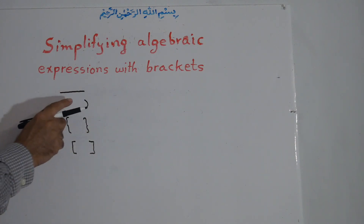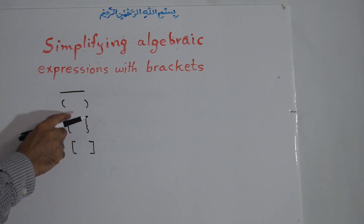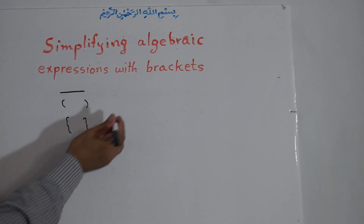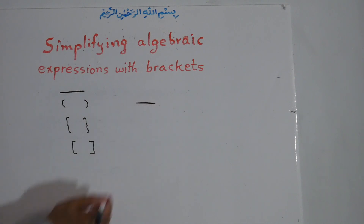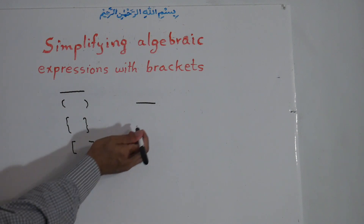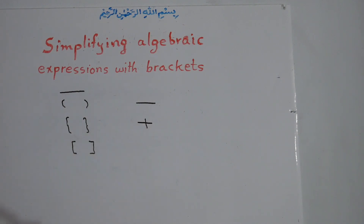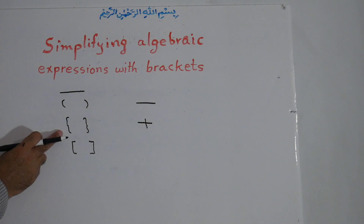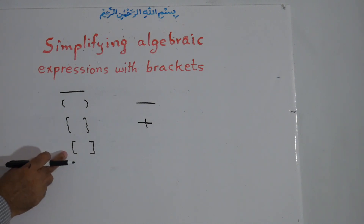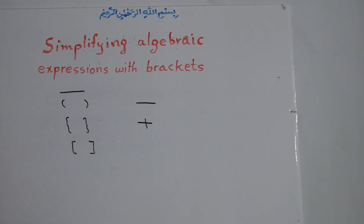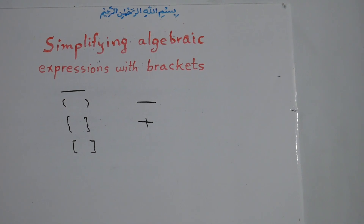First we simplify inside the bracket, then we perform the operation with what is outside the bracket. If there is a negative sign in front of the bracket, all the signs inside will change — positive to negative and negative to positive. If there is a positive sign, the inside does not change. Also, when simplifying, we remove the small bracket; the medium bracket changes to small, and the large bracket changes to medium.